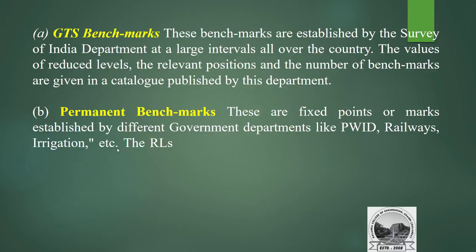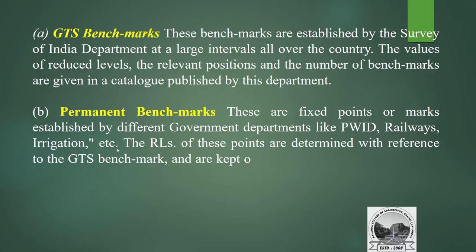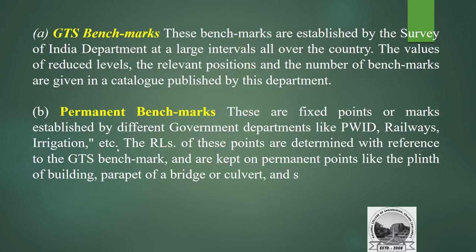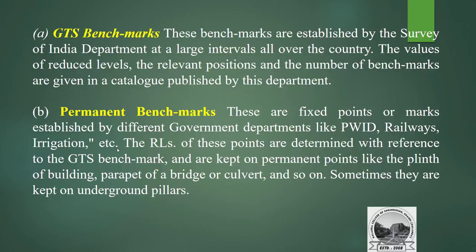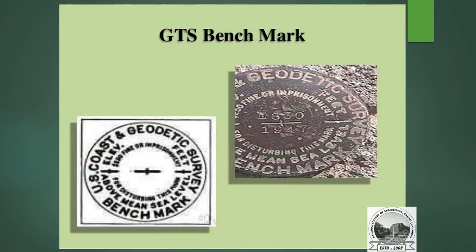Permanent benchmarks: these are fixed points or marks established by different government departments like PWD, railway, irrigation, etc. Their reduced levels are determined with reference to the GTS benchmark and are kept on permanent points like the plinth of a building, parapet of a bridge or culvert, or sometimes on underground pillars. This is the image of a GTS benchmark showing how it looks.